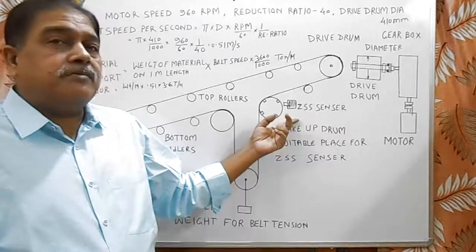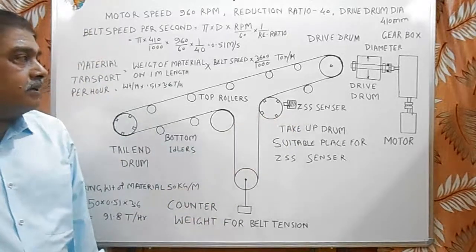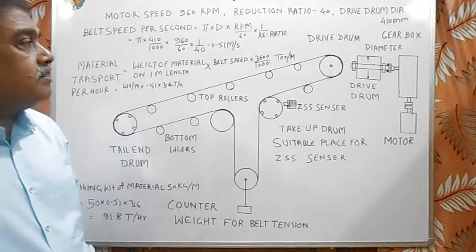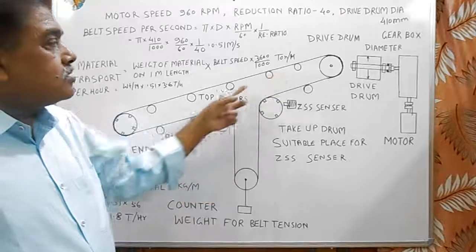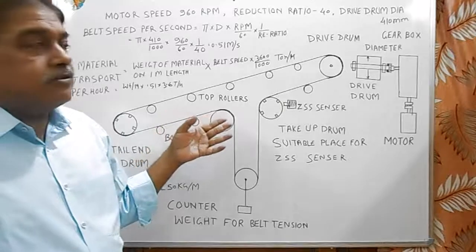So, the belt is tripped by ZSS. In addition to these, various safety devices are also used in belt conveyor. Here, number of pull card switches are provided, so that operator can stop the belt from any pull card switch.